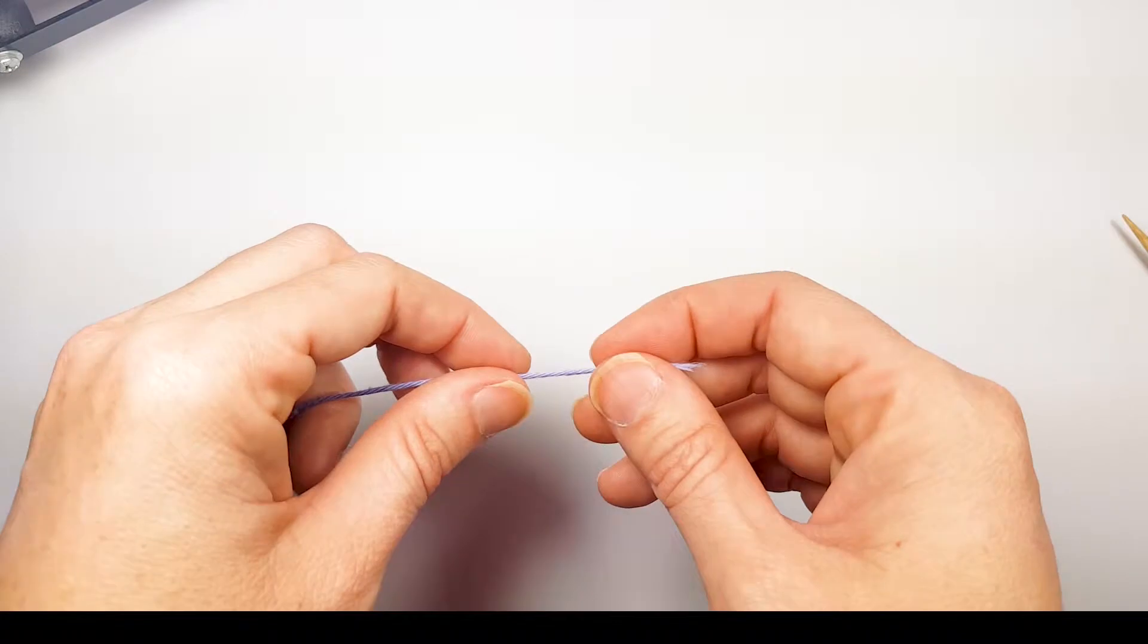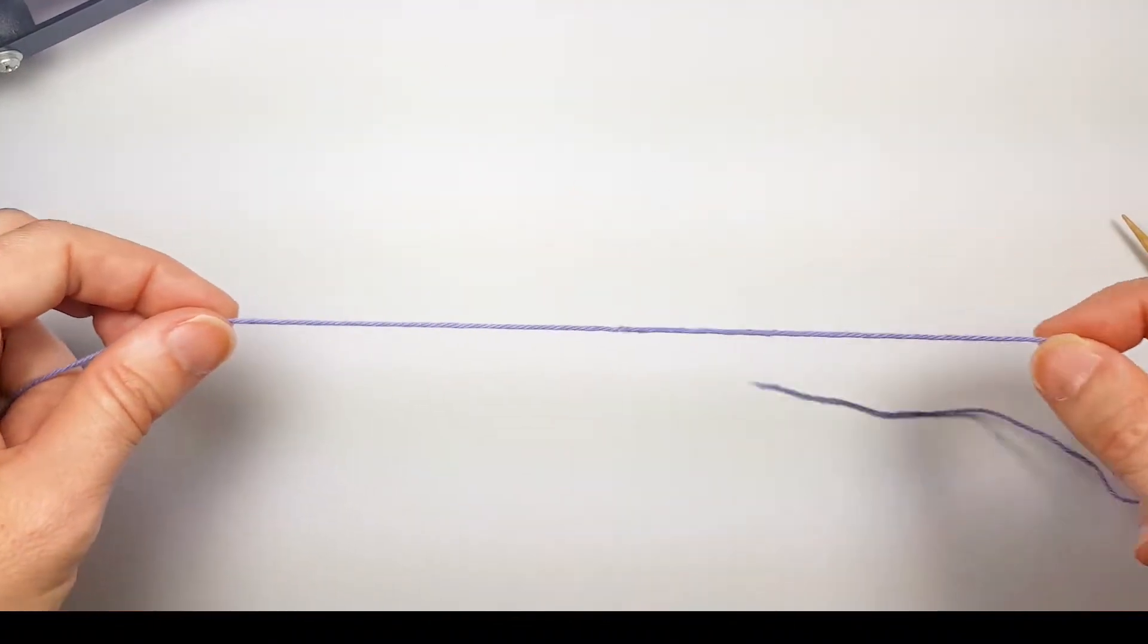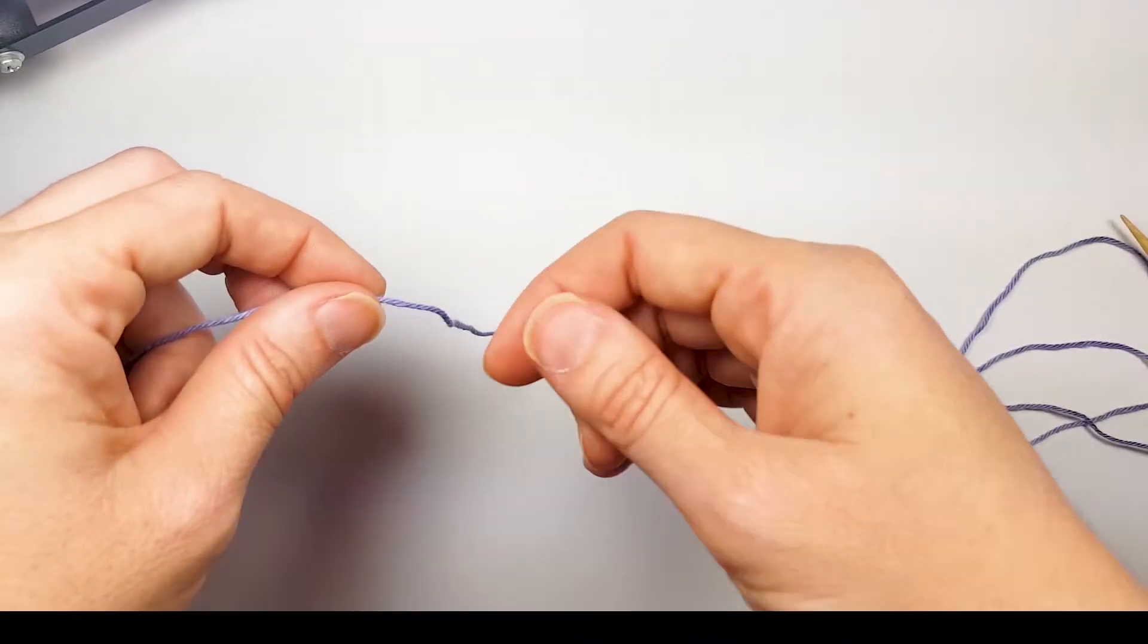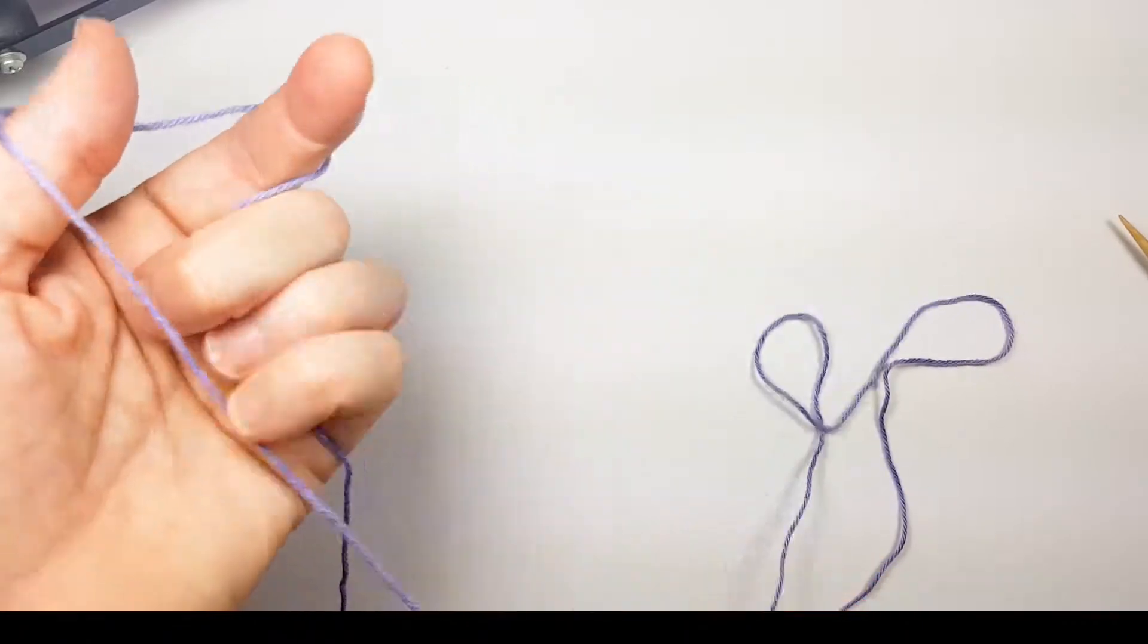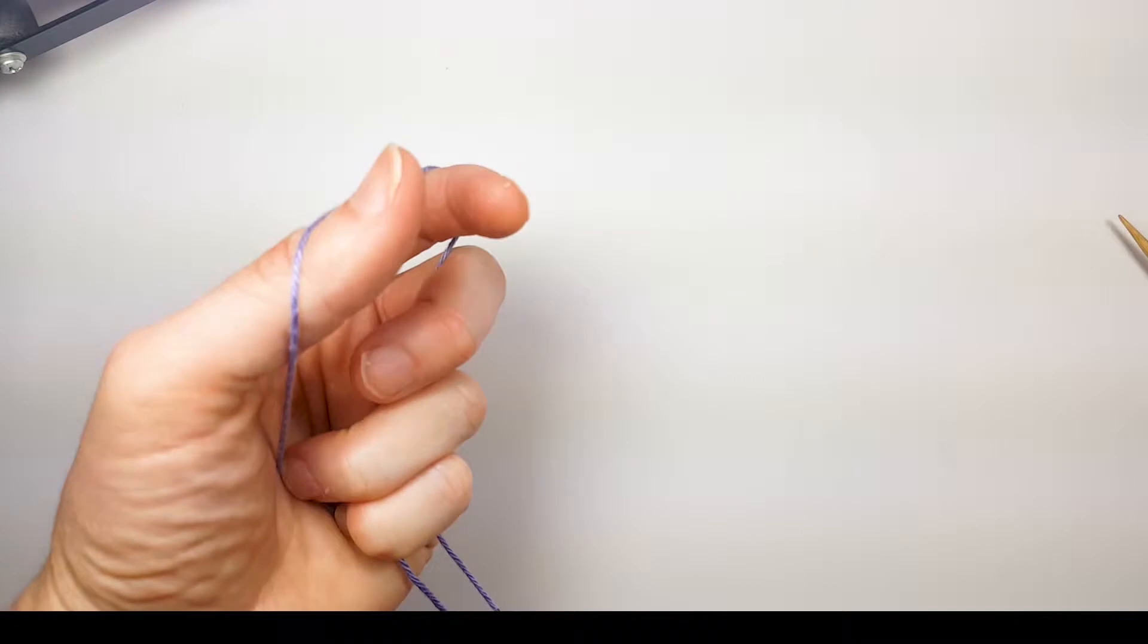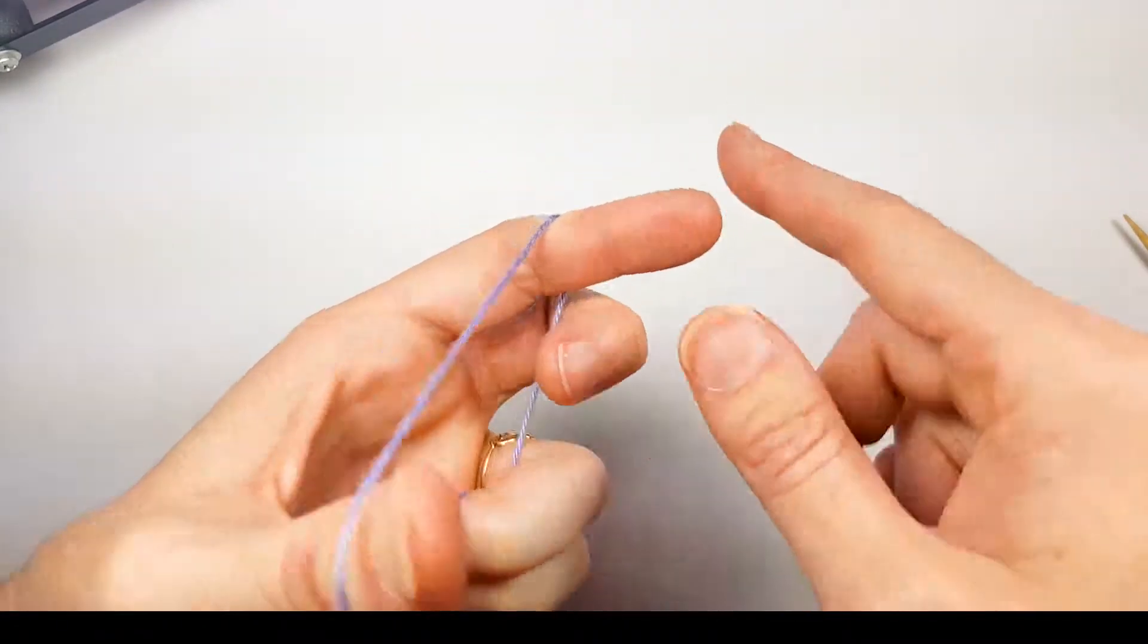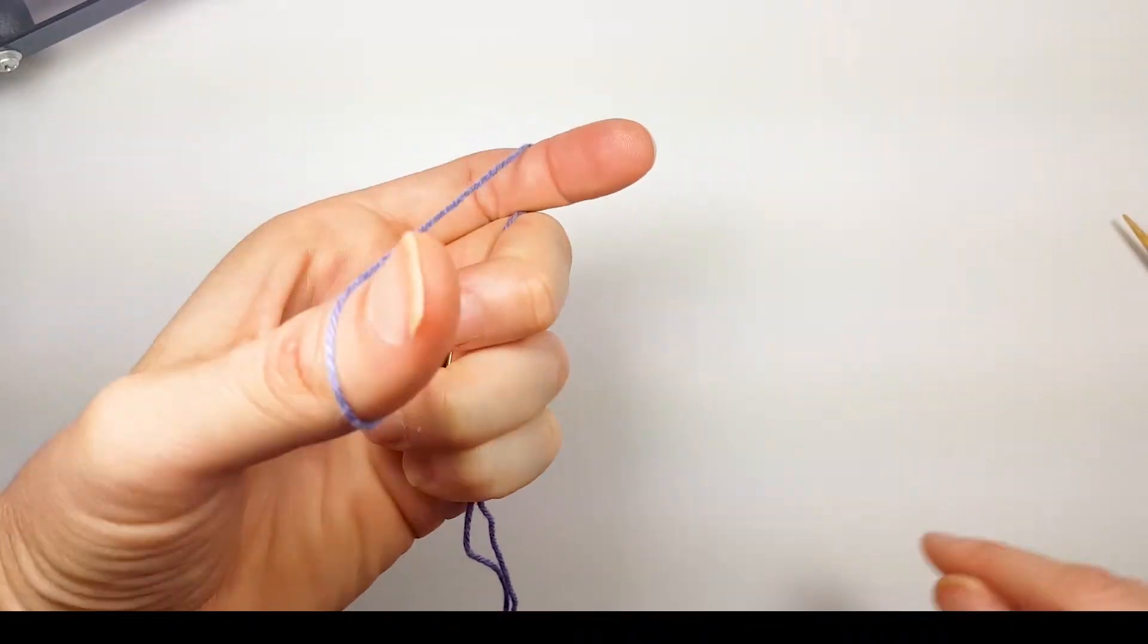We want to measure out our tail about three times the length of the knitting that you are going to need. We're going to place the tail over our thumb and the working yarn down inside our hand and form ourselves a triangle with our index finger extended and our thumb extended.